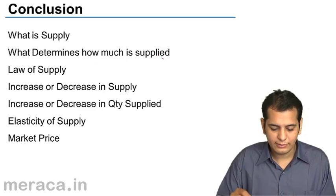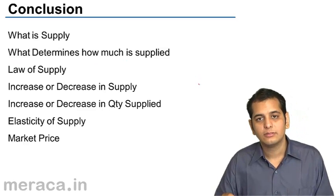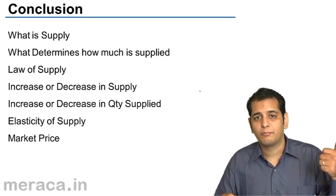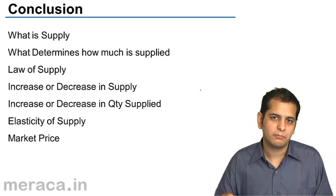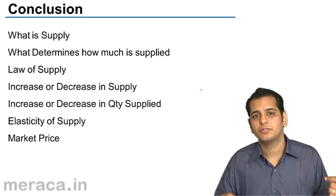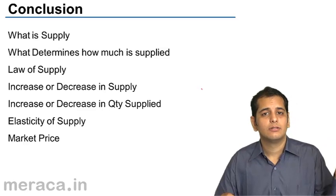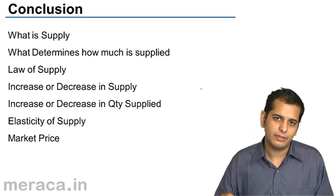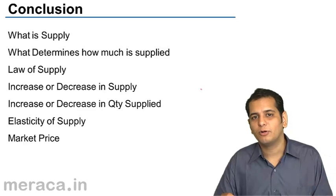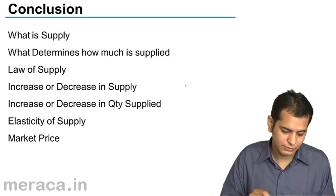What are the determinants of supply? We have seen that price is the major determinant of supply. The other determinants are technology, prices of related goods, government policies, and some other factors.